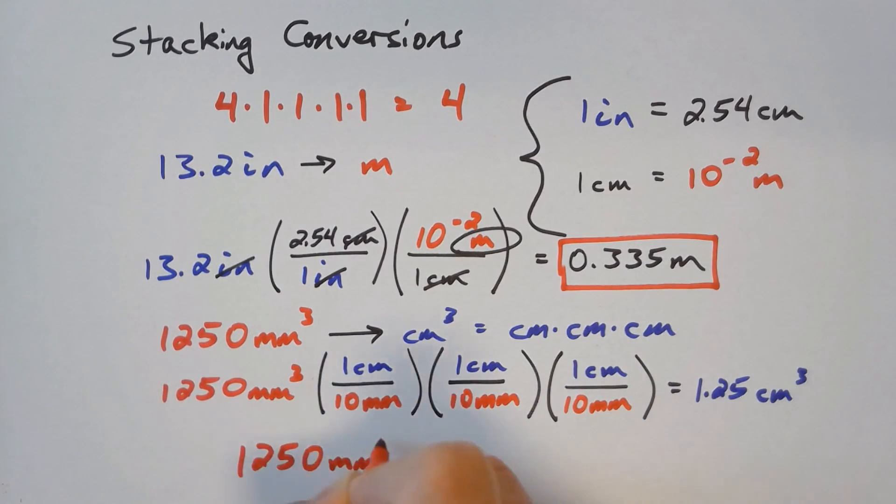We can simplify this expression by cubing the conversion factor. Notice that both the units and the numbers of the conversion factor are cubed. In other words, the cube applies to everything in parentheses.